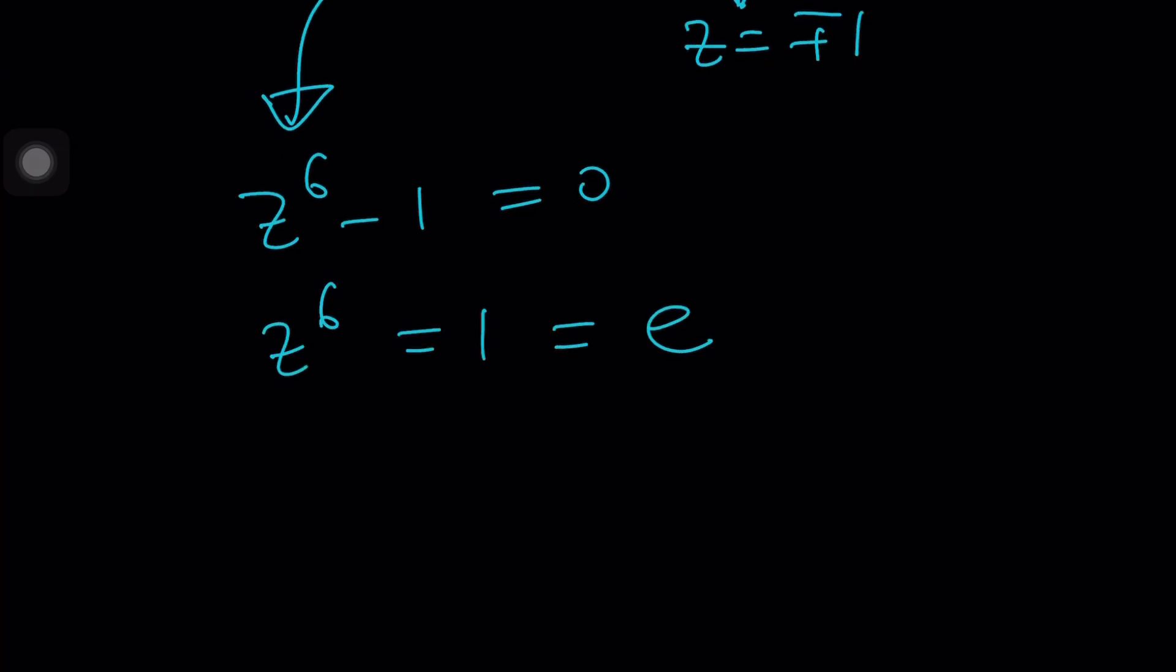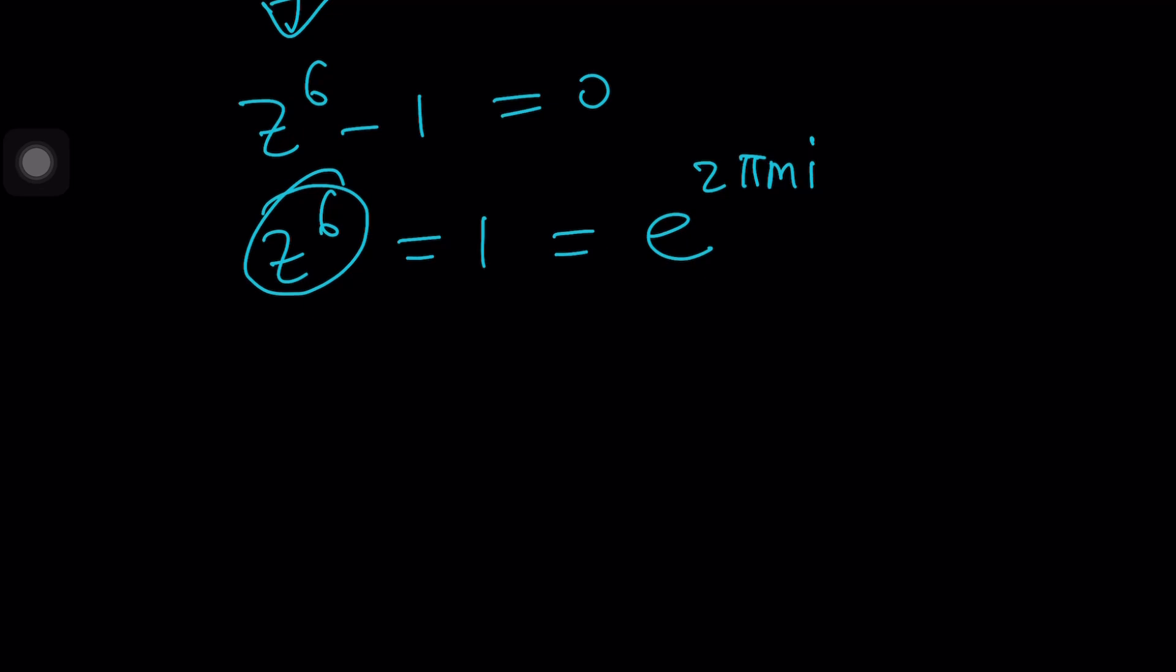one can be written as e to the power two pi mi. This time I use the different integer. This means you're dealing with the six roots of unity, and you can pretty much find them from here. But guess what?